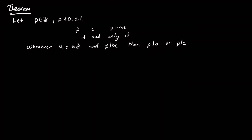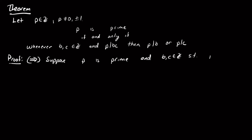Our first result on primes is a reformulation of the definition: p is prime if and only if whenever p divides b times c, then p must divide b or p must divide c. Since this is an if-and-only-if statement, it's equivalent to the definition. Let's begin the proof with the forward direction — suppose p is prime and b and c are integers such that p divides bc.